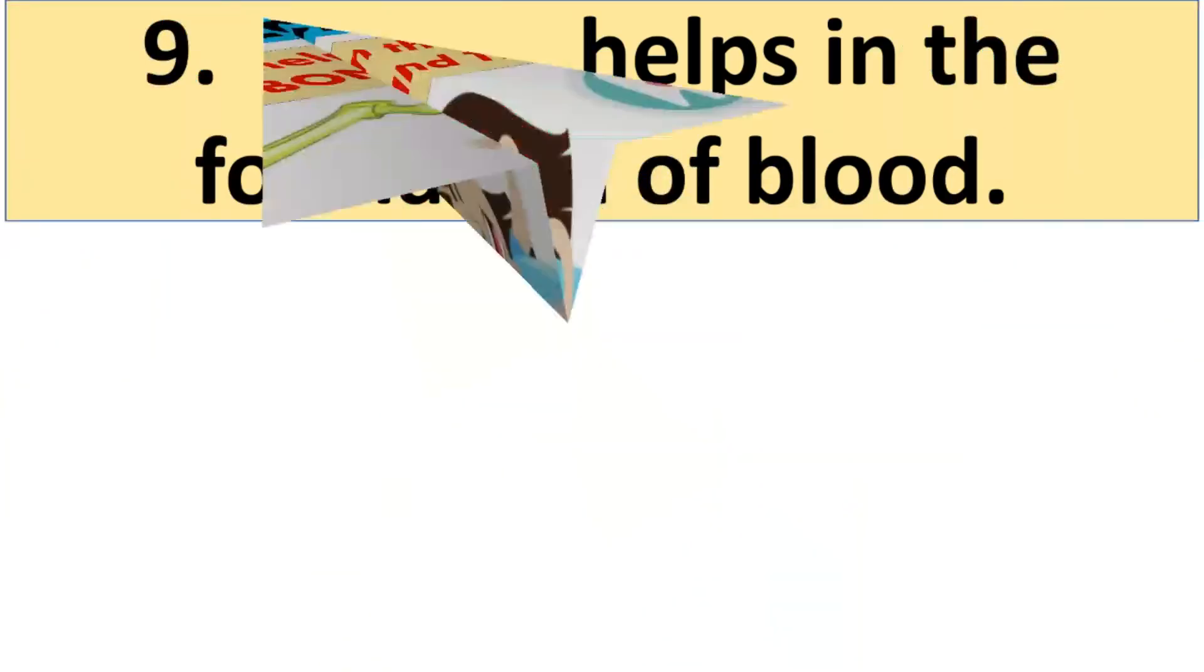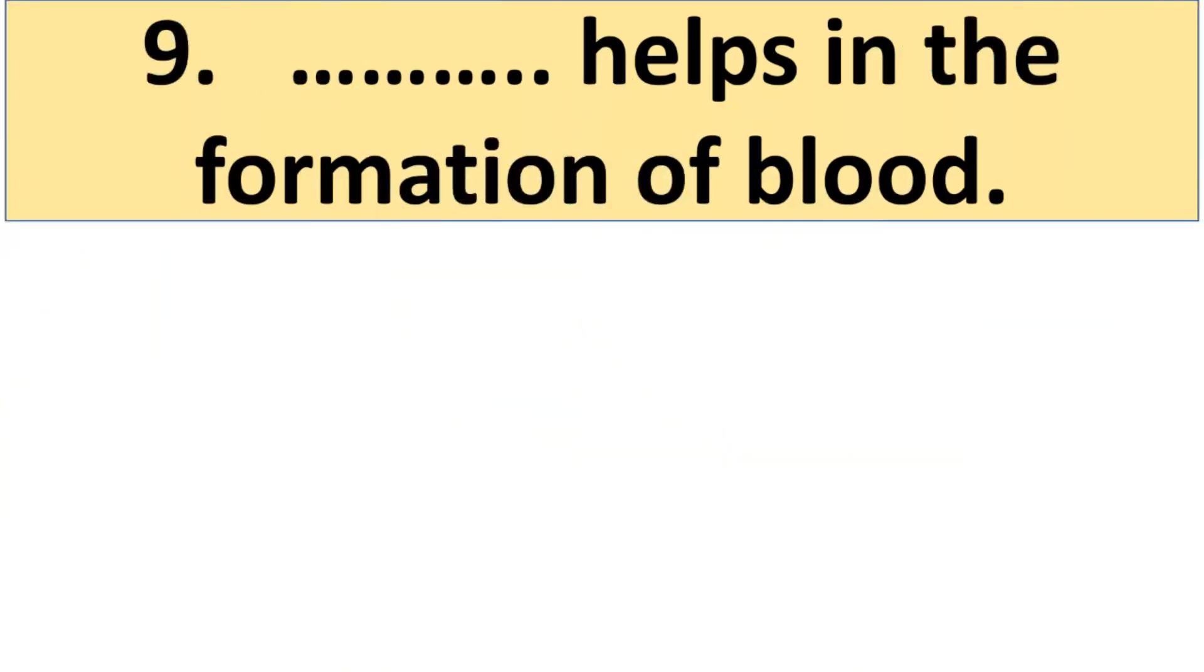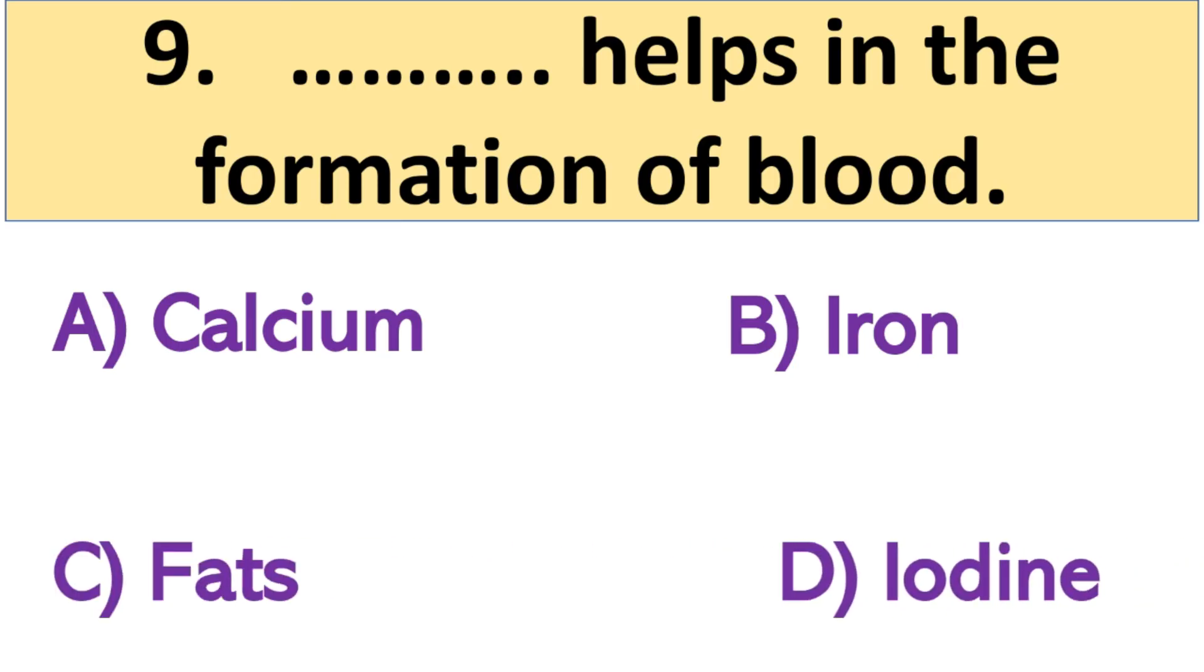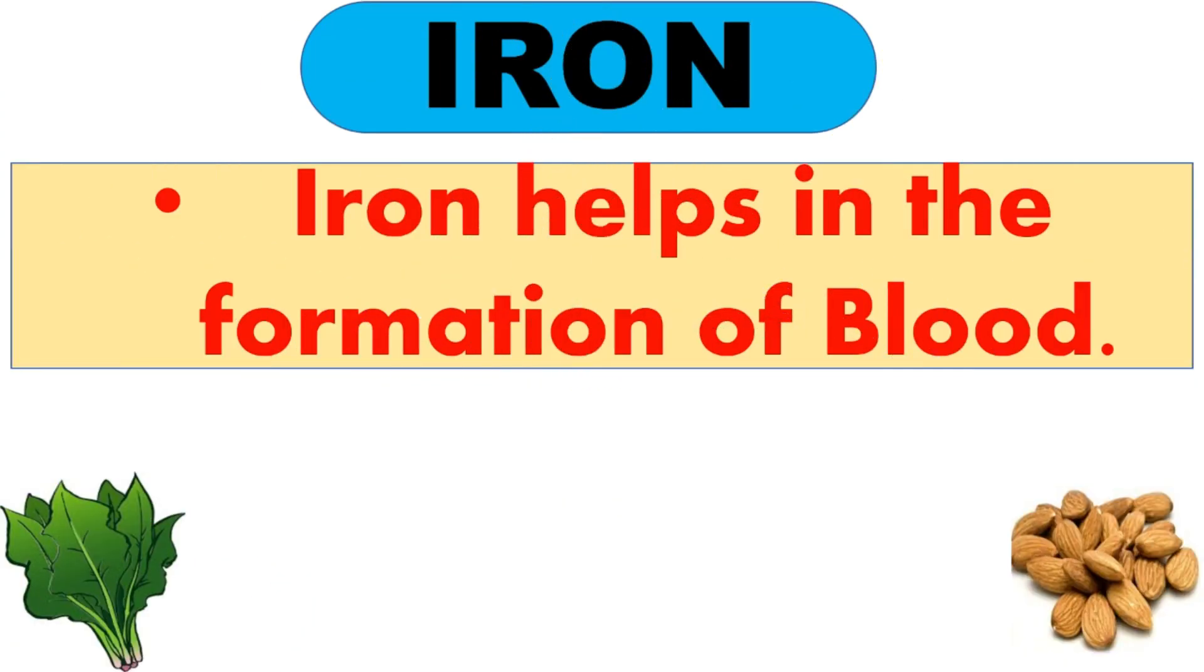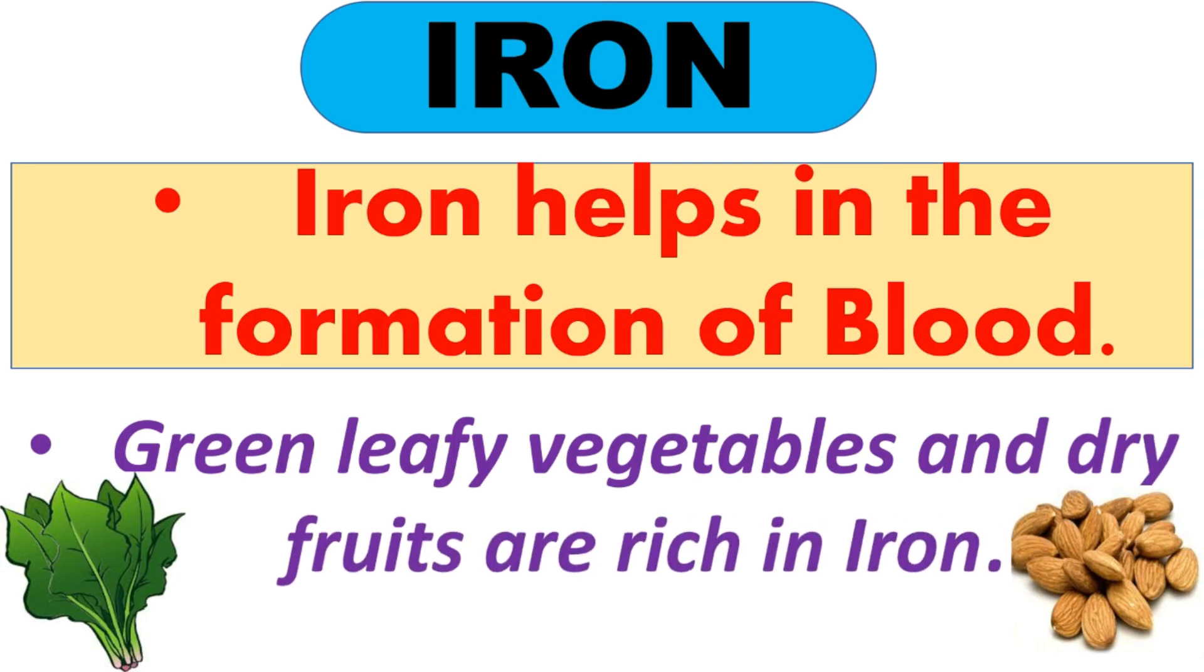So our next question is, blank helps in the formation of blood. So your options: A. Calcium, B. Iron, C. Fats and D. Iodine. Very good. And the right answer is B. Iron. So iron helps in the formation of blood. So green leafy vegetables and dry fruits are very rich in iron.